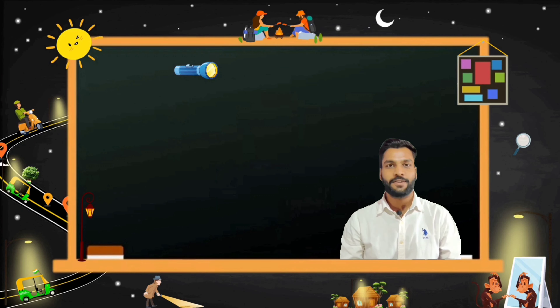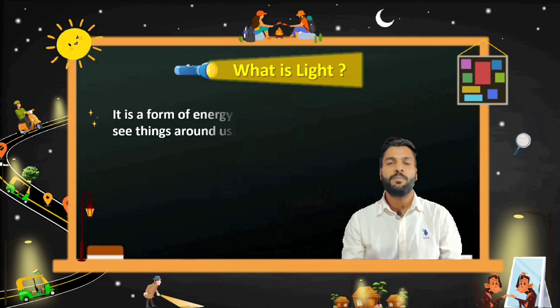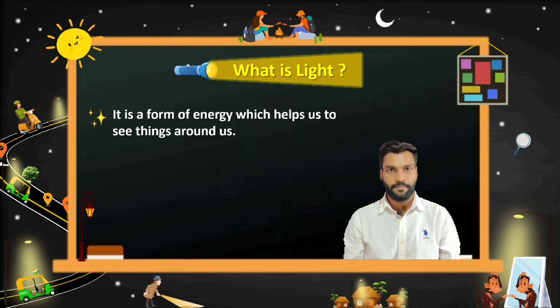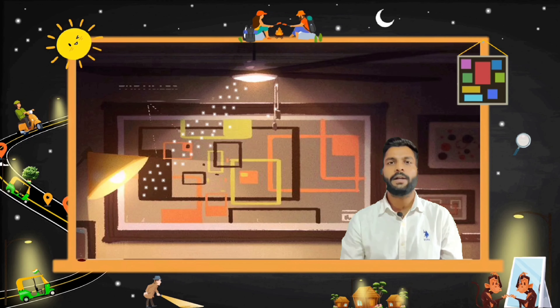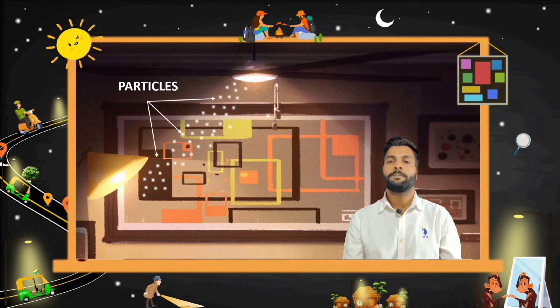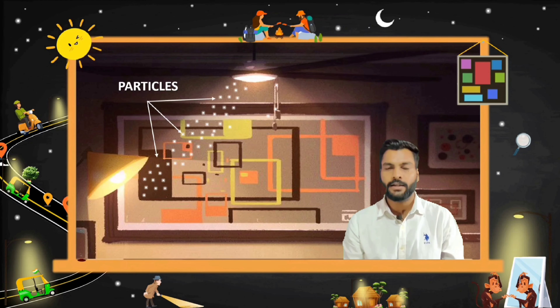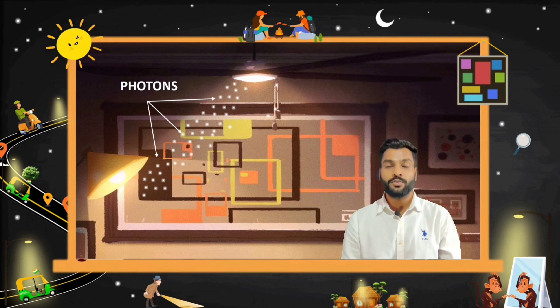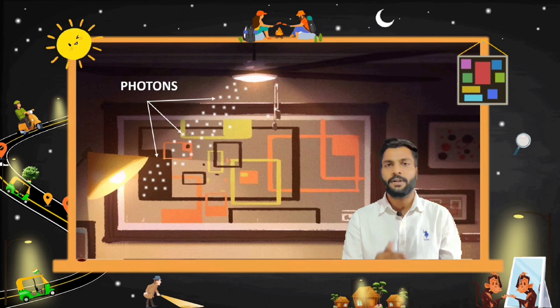Starting with the first — what is light? It is a form of energy which helps us to see things around us. Light is made of very small particles, and these small particles we call photons. These photons are very energized and they travel at a very fast speed.